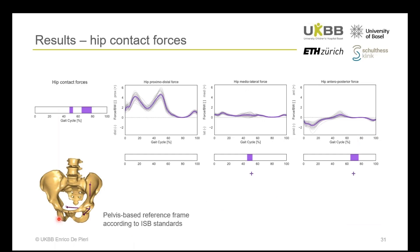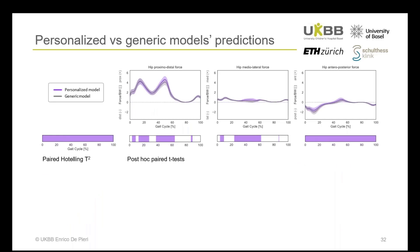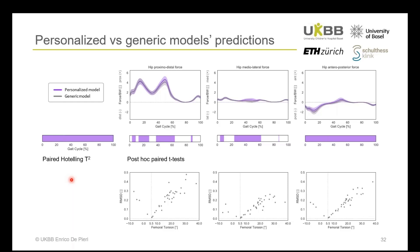We then calculated the resulting hip contact forces and expressed them in a pelvis-based reference frame according to ISB standards. The hip contact forces were also correlated with femoral torsion — subjects with higher antitorsion presented more medially and more anteriorly oriented hip contact forces. Finally, we evaluated the differences in joint force prediction when using generic versus personalized models, and observed statistically significant differences throughout the gait cycle. The difference in predicted forces between the two models increases for higher values of torsion.